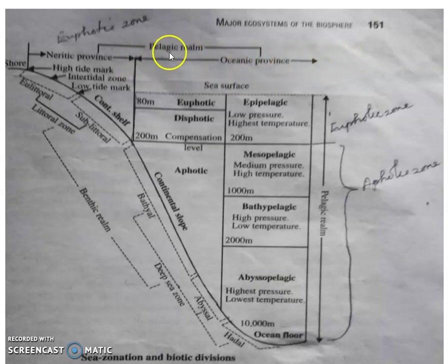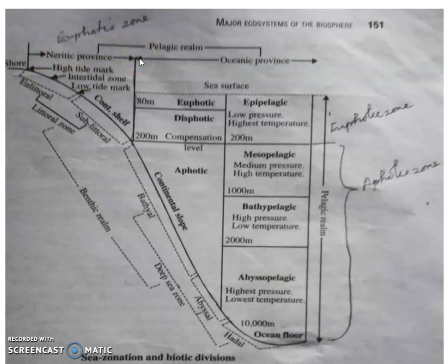The pelagic realm is divided into the neritic province, which is the shore area where the water is more nutritious and blended with the coastal area, and the remaining area is called the oceanic province.